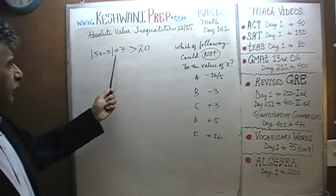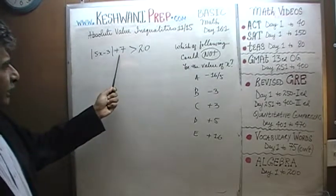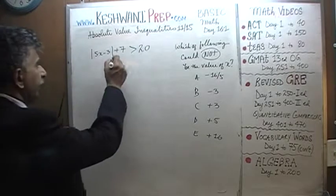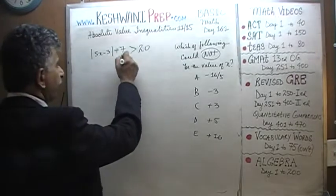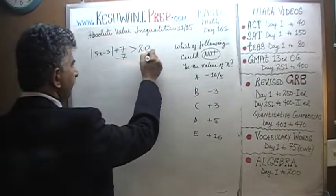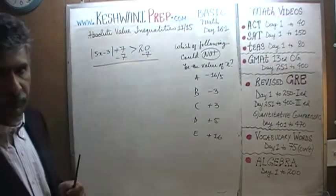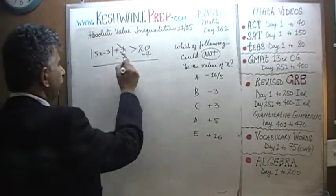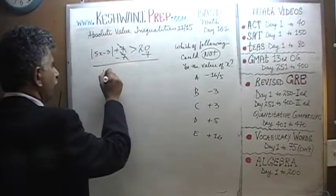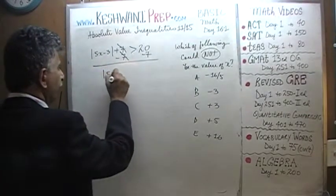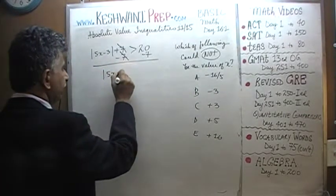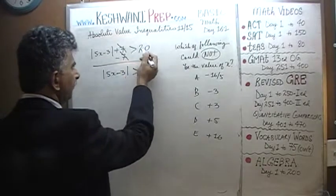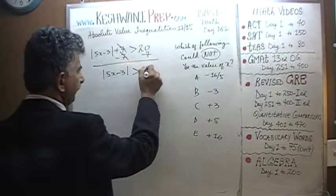The very first thing to do here is to bring this 7 to the other side. We are going to do that by subtracting 7 from both sides of the inequality, and that takes care of the 7. Now what we have is the absolute value of 5x minus 3 has to be greater than 20 minus 7, which is 13.